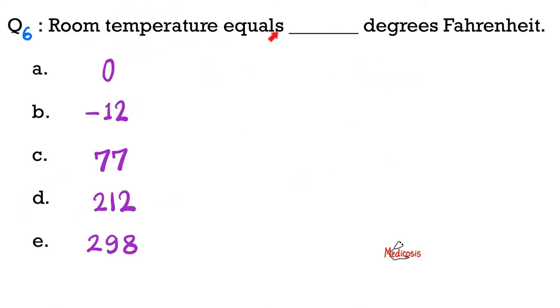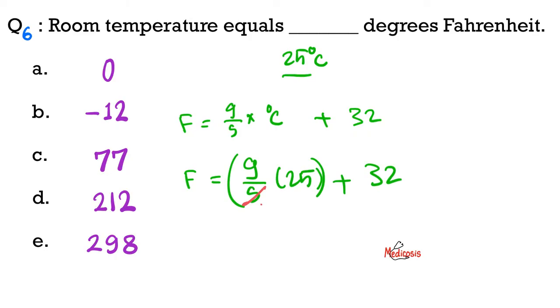Number 6, room temperature equals what on the Fahrenheit scale? We know that room temperature is 25 degrees Celsius. Now let's convert. So I have 9 over 5, multiply this by degrees Celsius, and add to that 32. So degrees in Fahrenheit equals 9 over 5, multiplied by 25, and then you add to that 32. Divide by 5, you get 1. Divide by 5, you get 5. 9 times 5 is 45. 45 plus 32 equals 77.